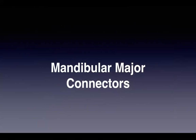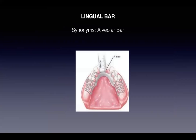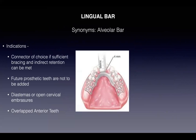The first mandibular major connector is the lingual bar (synonym: alveolar bar). The superior portion must sit 4 millimeters away from the gingival margin. Indications include: it is the connector of choice if sufficient bracing and indirect retention can be met; if future prosthetic teeth are not to be added; if diastemas or open cervical embrasures are present; or if there are overlapped anterior teeth.